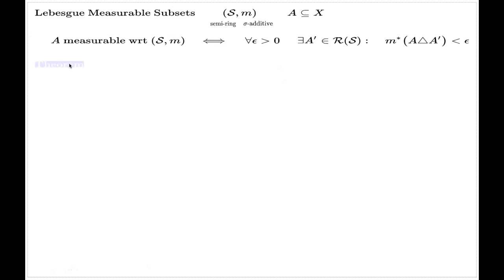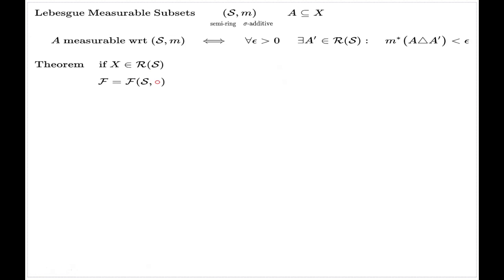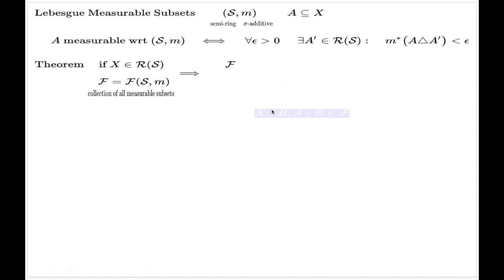Now the theorem — the main fundamental theorem in the measure integration theory — says that if your universal set comes from the minimal enveloping ring, and if F, or sometimes written F(S,M) to emphasize dependence on the S,M couple, is the collection of all the Lebesgue measurable subsets, then two conclusions are true: this collection F is a sigma-algebra, and the external measure on this collection will be a sigma-additive measure.